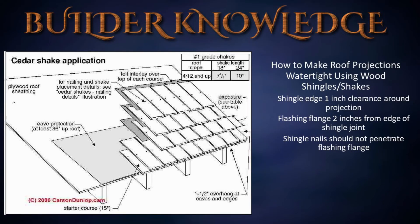How to make roof projections watertight using wood shingles or shakes: allow a one-inch minimum clearance of the shingle or shake edges around the projection, keep the edge of the projection flashing flange a minimum of two inches from the edge of the shingle or shake joint, and be sure that the shingle or shake nails do not penetrate the projection flashing flange.